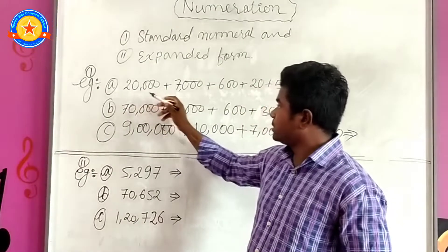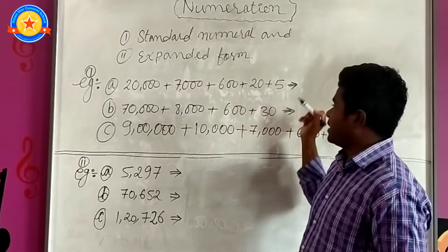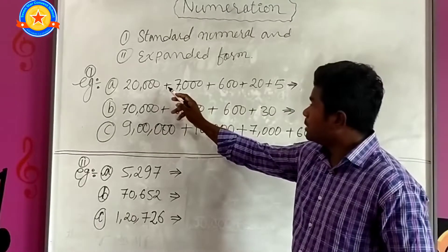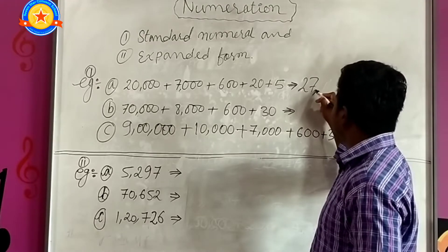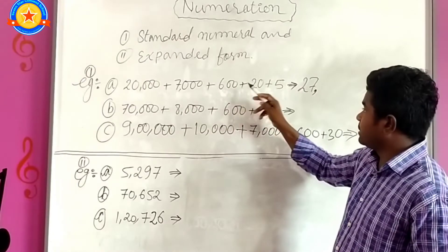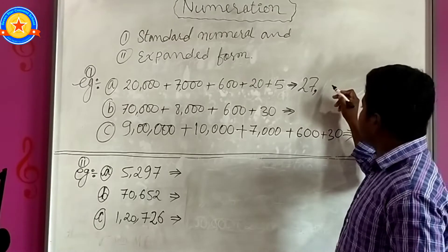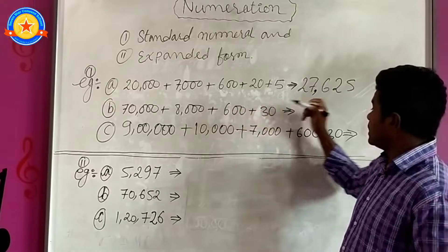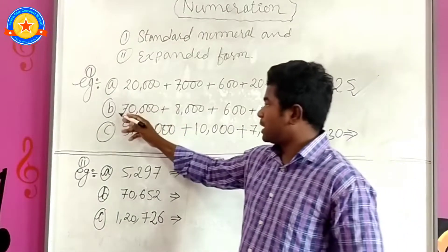Number A: 20,000 plus 7,000 plus 600 plus 20 plus 5. Let's write the answer. 20,000 plus 7,000 will become 27,000. Again we have 600 plus 20 plus 5, it will become 625. So the answer is 27,625. Now let's do the second one.